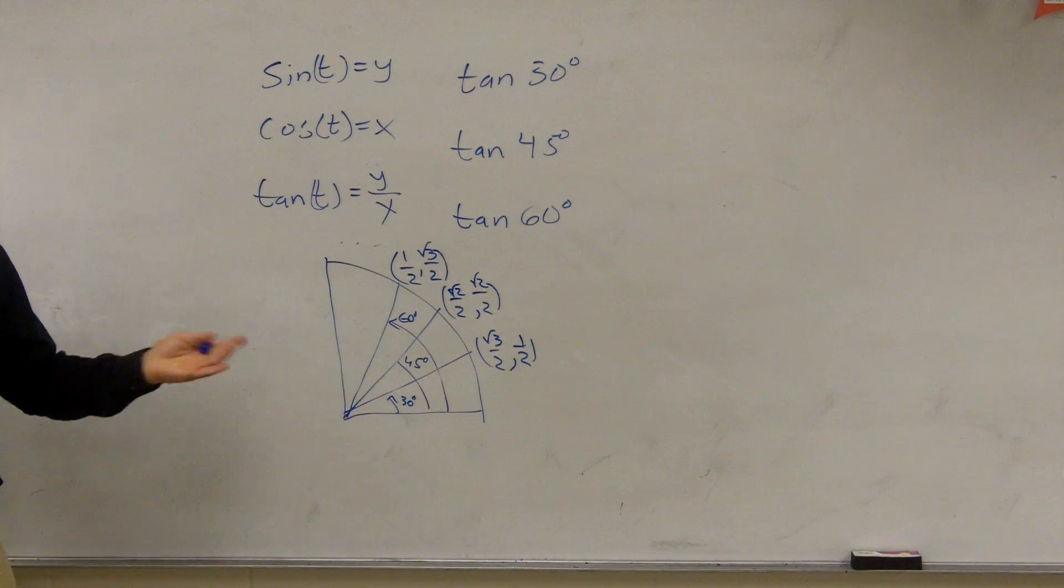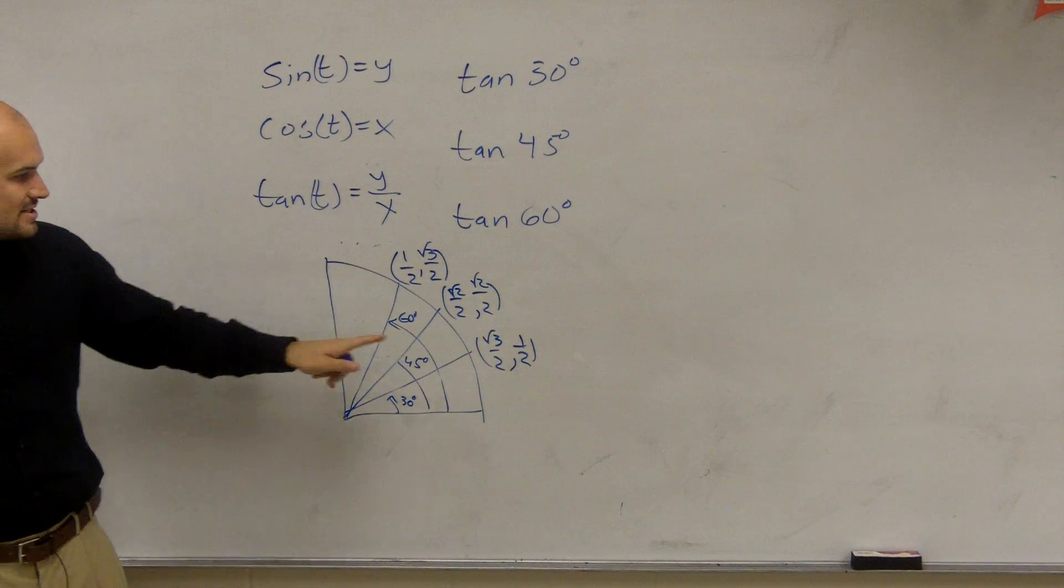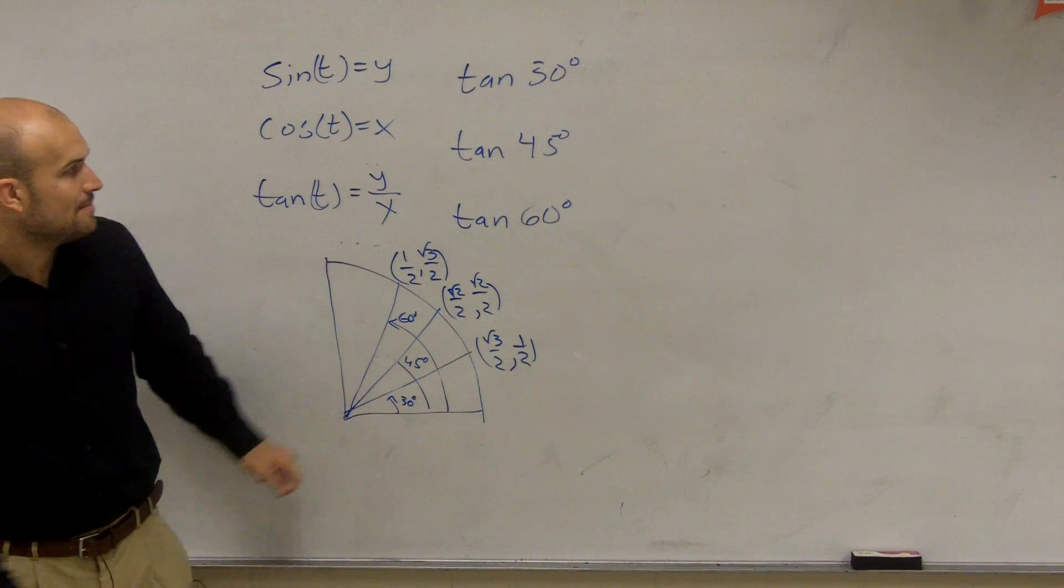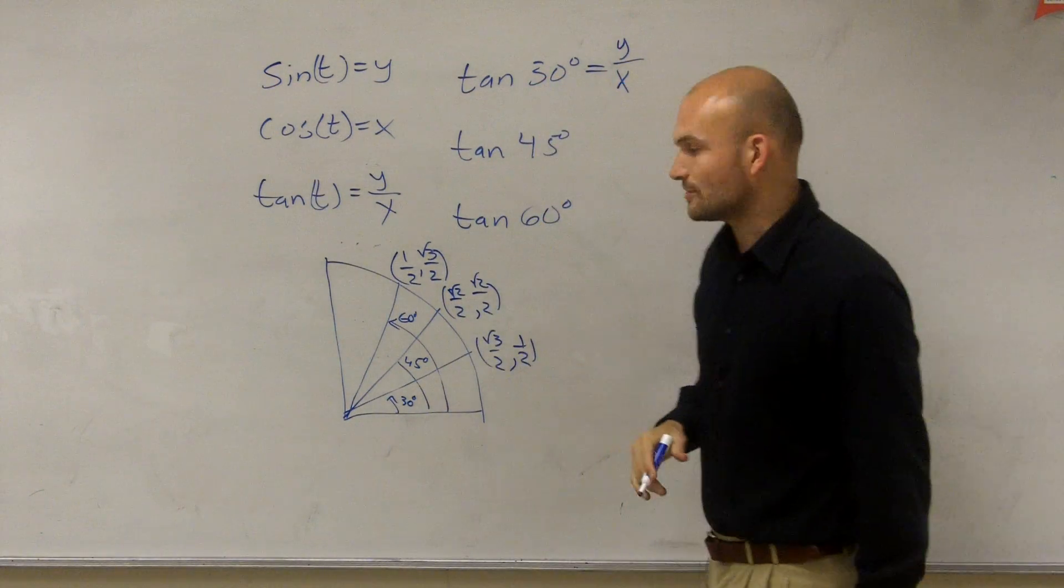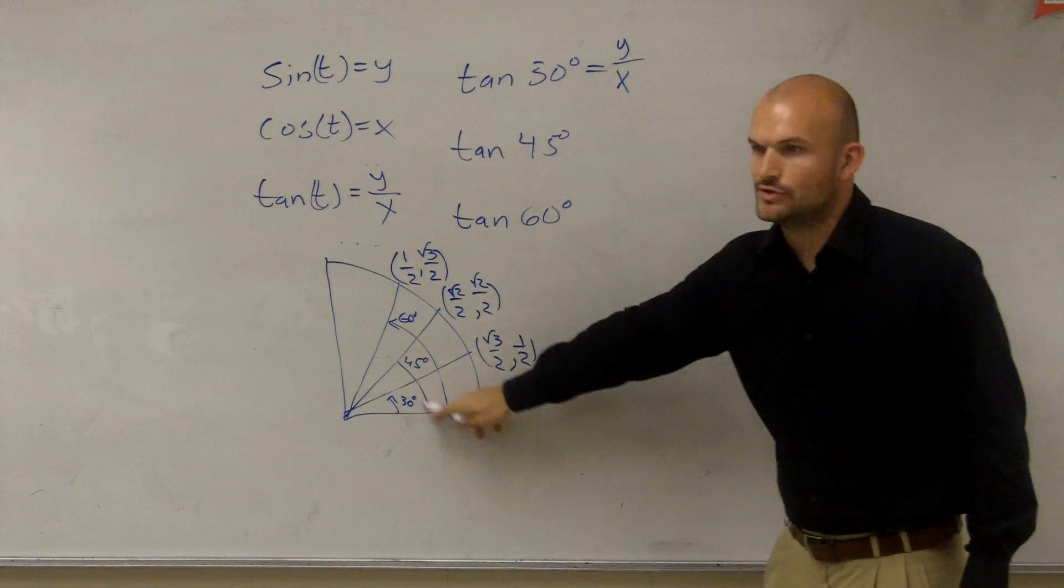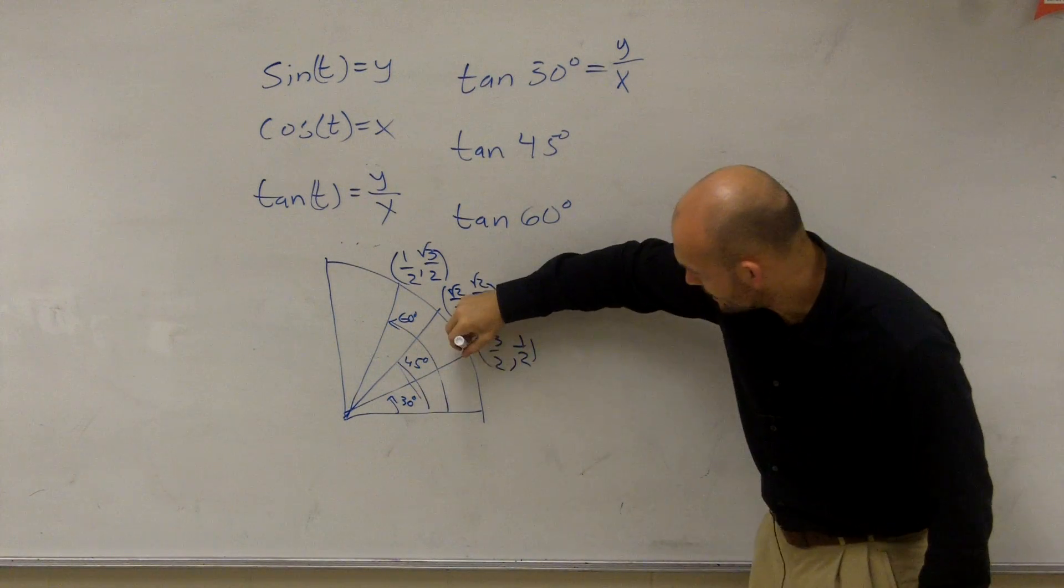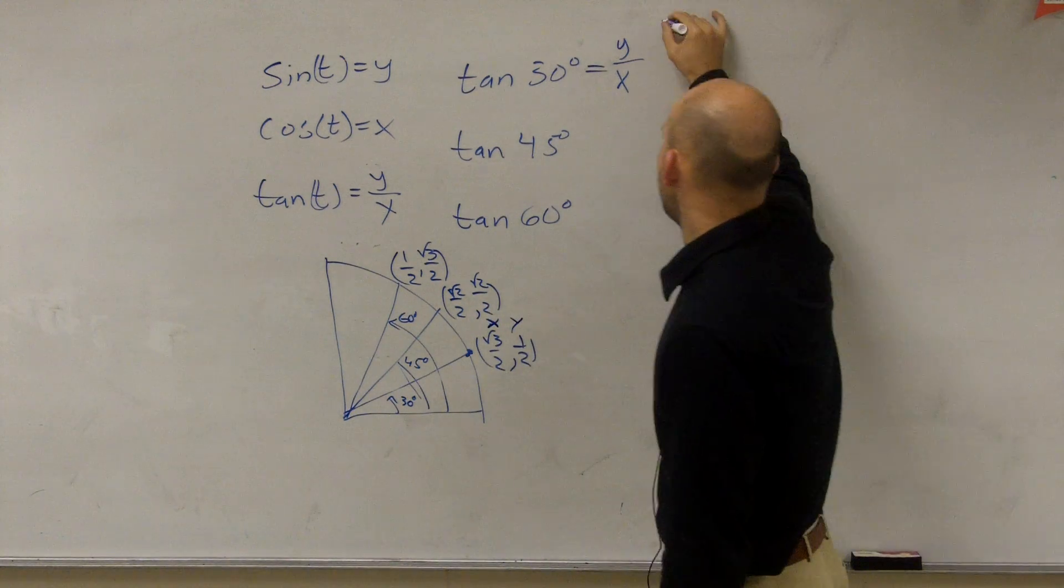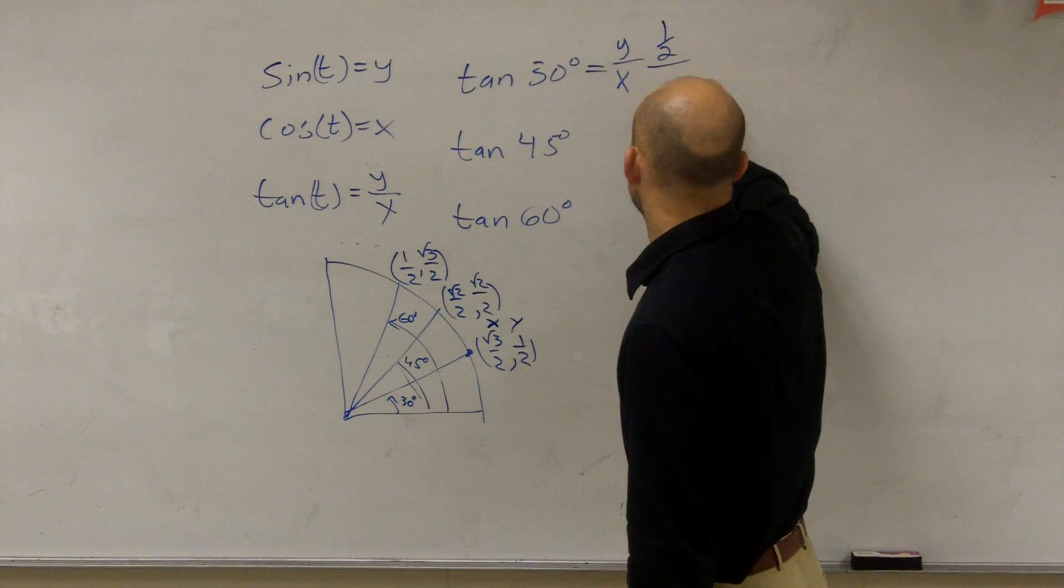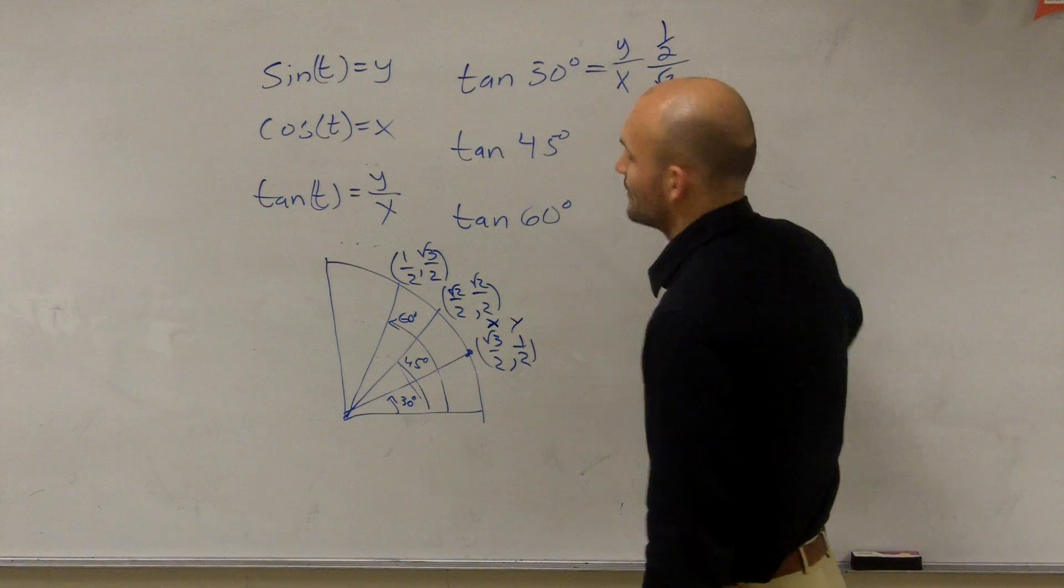Alright, so remember, if I wanted to figure out this tangent of 30 degrees, that means I'm going to take the y over the x-coordinate at 30 degrees. So I look at the 30 degree point on the unit circle, it's right here. I have an x-coordinate and I have a y-coordinate. So I'm going to take 1 half and divide it by square root of 3, divided by 2.